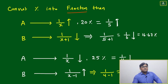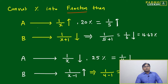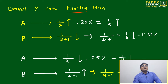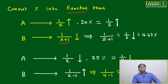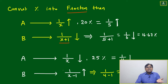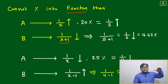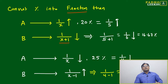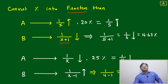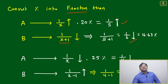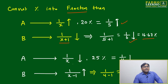We can also understand this in terms of fractions, which is more handy. If a is increased by 1/x — suppose 20 percent, which in fraction form is 1/5 — then b will decrease by 1/(x+1), meaning 1/6. The value is the same: 16.67 percent.